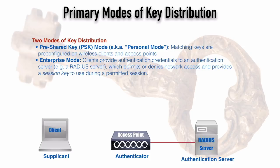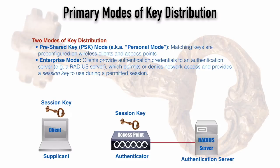Here's a paradox: the supplicant is not normally allowed through the access point to reach the wired network, but it needs the wired network to communicate with the authentication server. The way it works is that authentication request traffic is the one exception the authenticator will allow through. If the client provides valid credentials, the authentication server gives a matching session key to both the client and the authenticator. For home networks you might use PSK mode, but for corporate environments where users come and go, enterprise mode lets you simply add and delete user accounts on the authentication server.